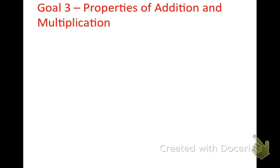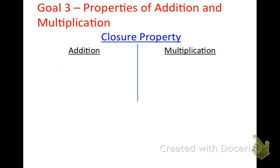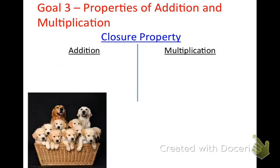The first property of addition and multiplication I want to talk about is the closure property. There are going to be five properties in all, and each one works for addition and multiplication, but not necessarily for subtraction or division. Closure happens whenever you take two things from a set, combine them a certain way, and get something else from that set. For instance, if you take two dogs and mix them, you're going to get dogs.